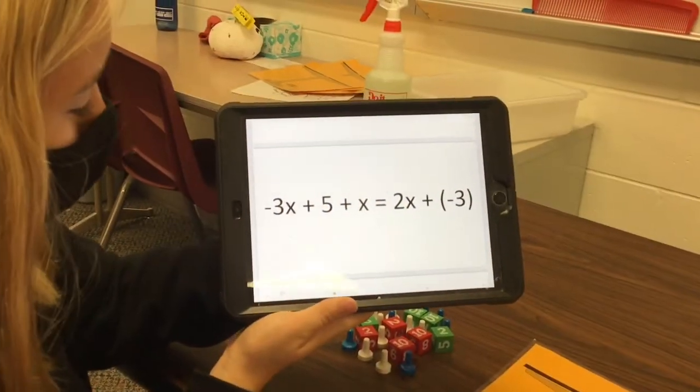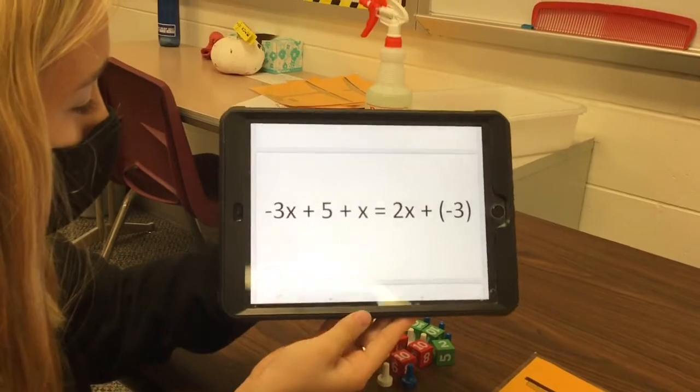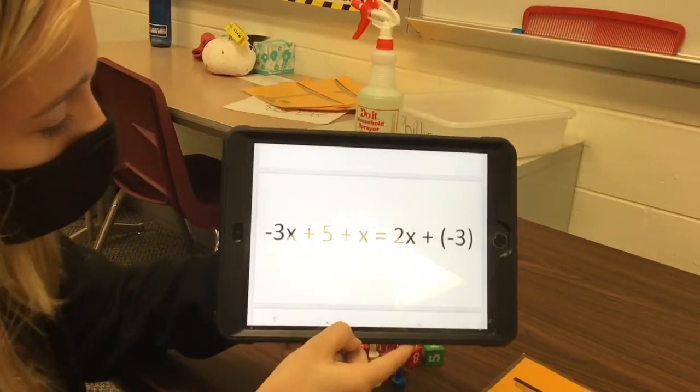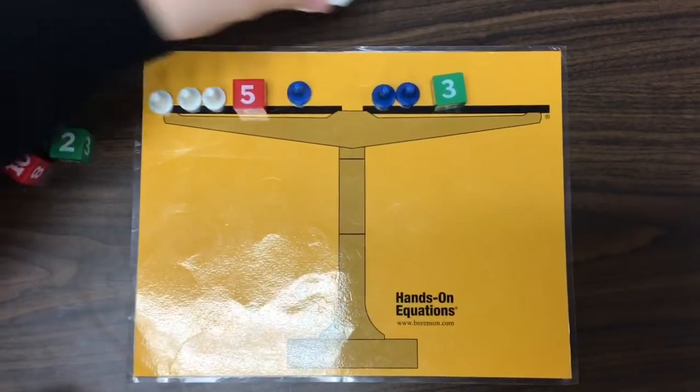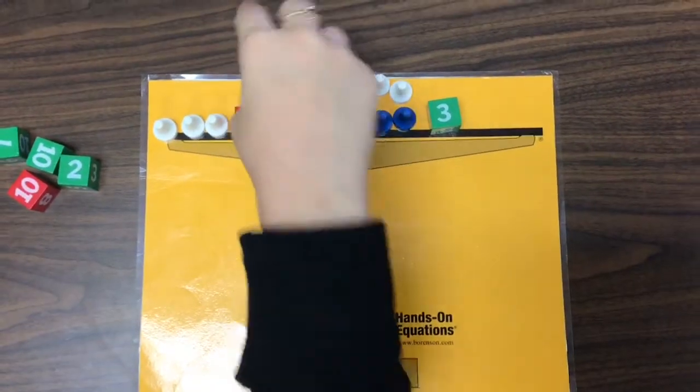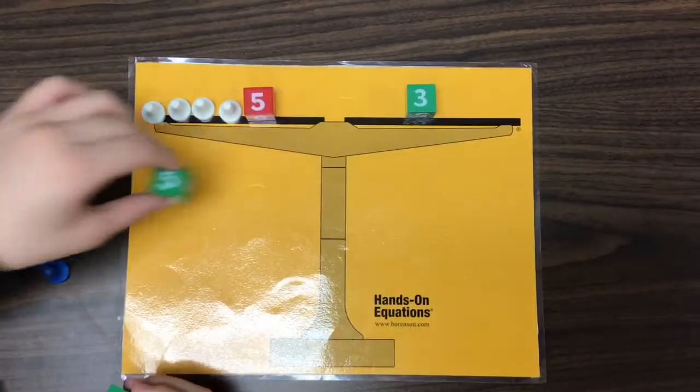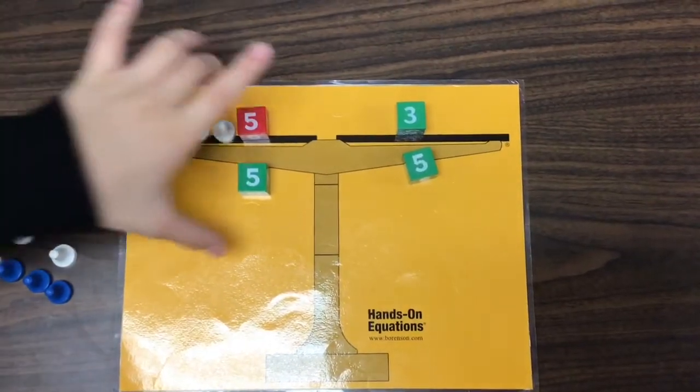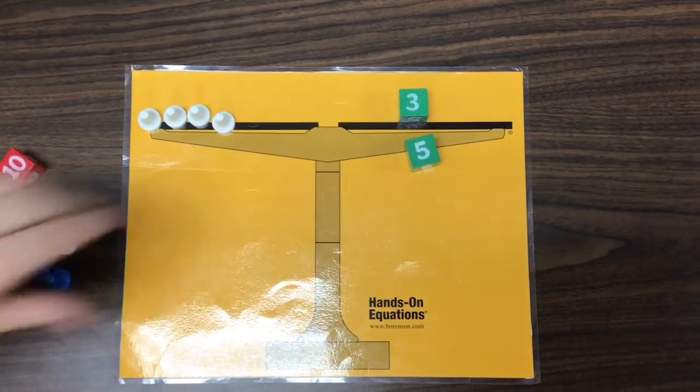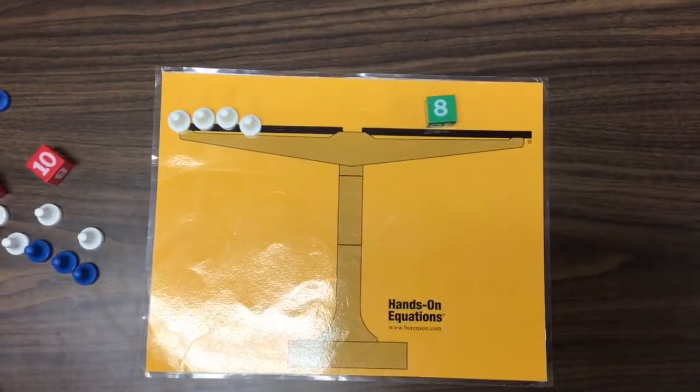My next problem is the opposite of 3x plus 5 plus x equals 2x plus negative 10. So, the next thing I'm going to do is put two white pawns on each side, and we can take that away. Then I'm going to add a negative 5 to each side, and you can take that away, and that would equal 8. My answer is x equals 2.